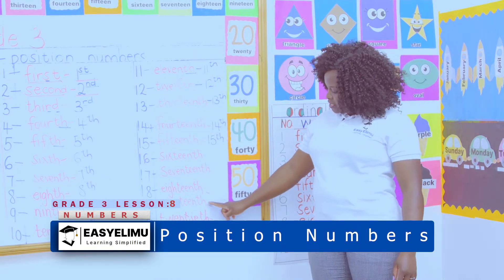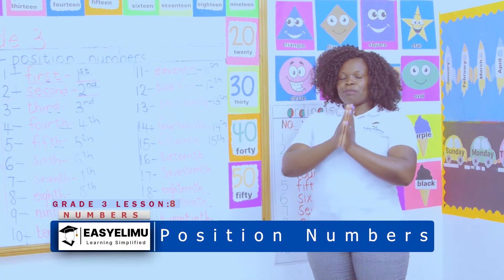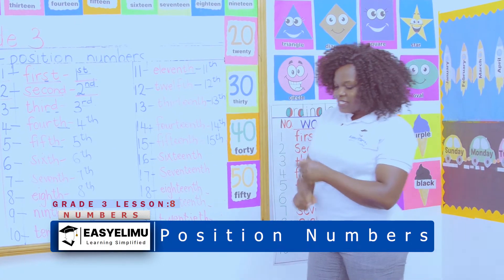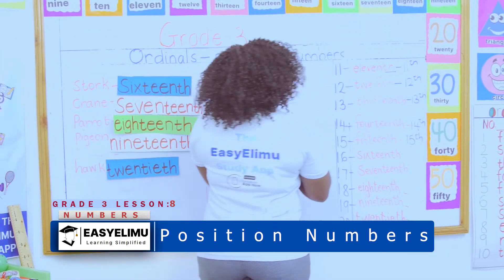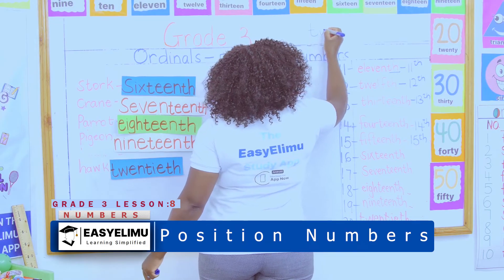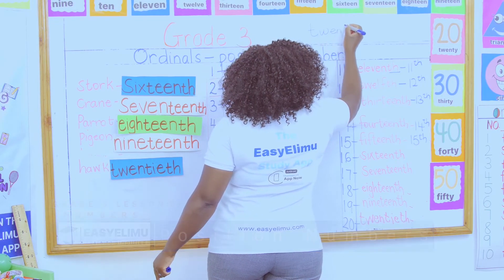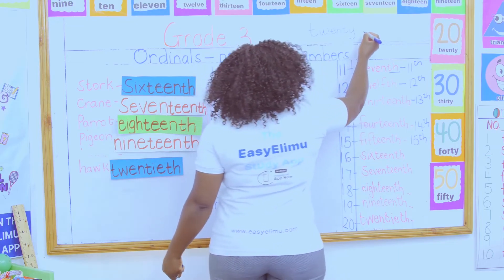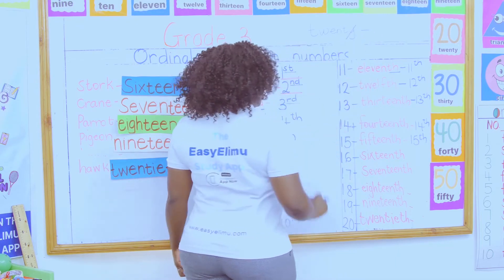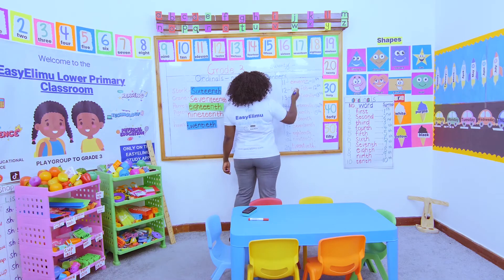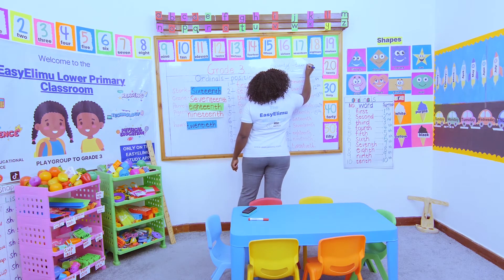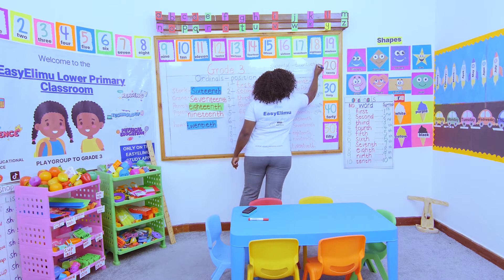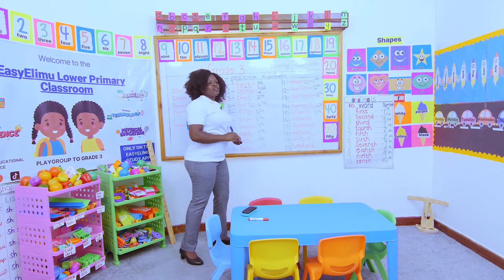Up to nineteenth. And what about twentieth? On twentieth, the words that end with Y — for example, twenty — we said on this word the Y is cancelled. And after canceling the Y, you don't write twentieth with a Y. Then where the Y was, you put an I-E before you add a TH, to form the word twentieth.